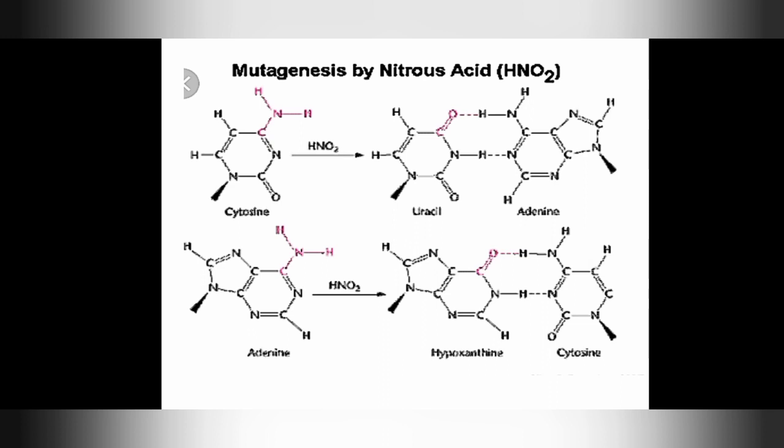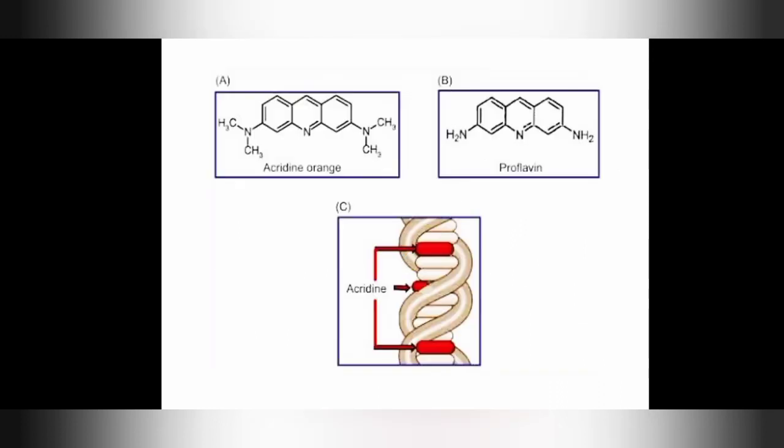Cytosine can be changed into uracil by oxidative deamination, so instead of pairing with guanine, the new uracil pairs with adenine — causing a G-C to A-T transition. Guanine is converted into xanthine by nitrous acid's oxidative deamination, and xanthine pairs with cytosine. These are the mechanisms by which nitrous acid causes induced mutations.